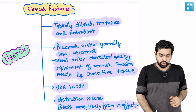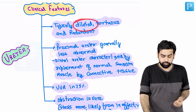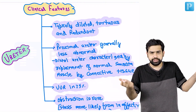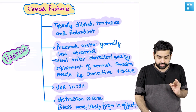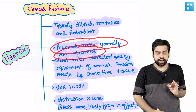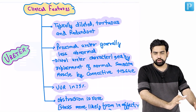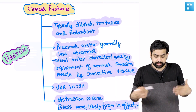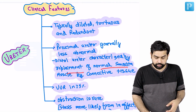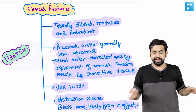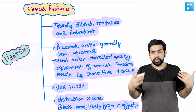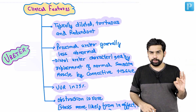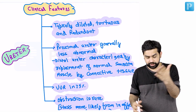Regarding the ureter, it is typically dilated, tortuous, and redundant. The proximal ureter is generally less abnormal; the major problem lies in the distal part. The distal ureter is characterized by replacement of normal smooth muscle with connective tissue, causing impaired peristalsis, which is responsible for stagnation of urine and hydronephrosis.